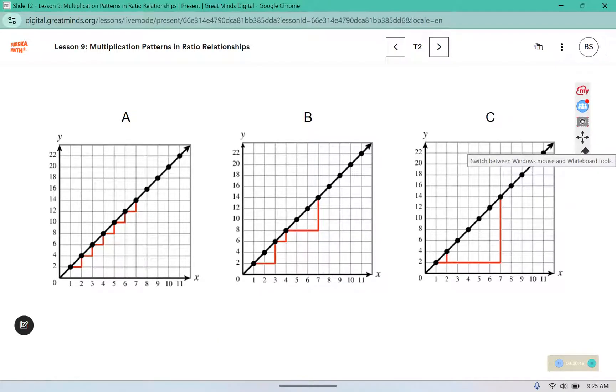Here I have three graphs. These three graphs represent the same ratio relationship. What do you notice about them, and what do you wonder?